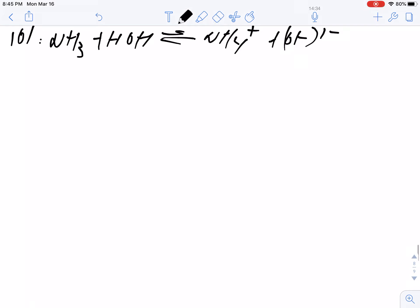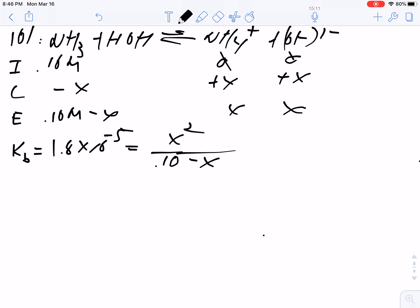The concentration is 0.1 molar, zero, zero, zero. Minus x, plus x, plus x. 0.1 molar minus x, x, x. Then my Kb expression is products over reactants. Kb for ammonia is 1.8 times 10^-5. I look that up. It's going to be equal to x squared over 0.1 minus x. This x is too small compared to my 0.1 molar, so when I solve for x, I get 0.00134 molar.